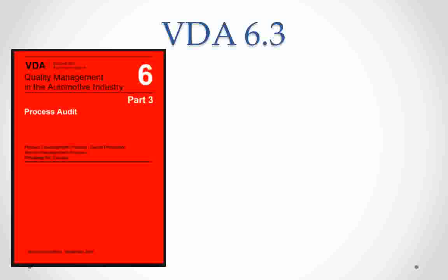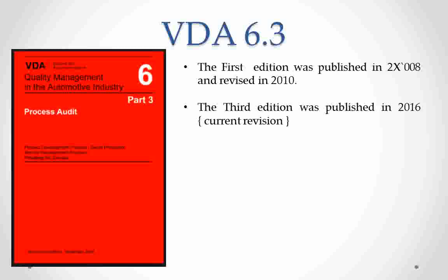By now we know about VDA QMC and its various publications, and we have seen the VDA 6 family of documents. So now it's time to know more about VDA 6.3. This is the image of the VDA 6.3 standard, which is referred to as the Red Book. The first edition was published in 2008 and revised in 2007. The third edition, which is the current version, was published in 2016. VDA 6.3 process audit is an assessment method to conduct process checks within a QMS and assess their capability and performance.